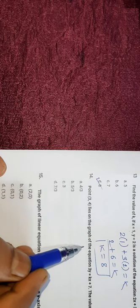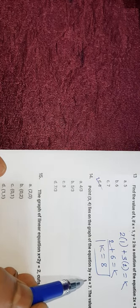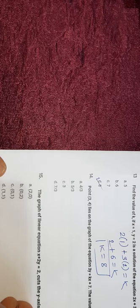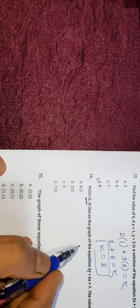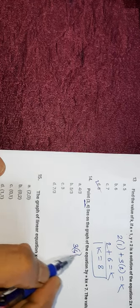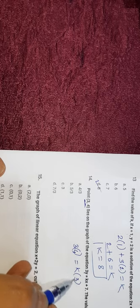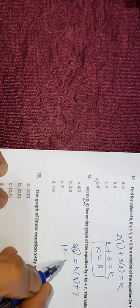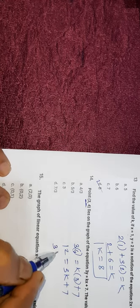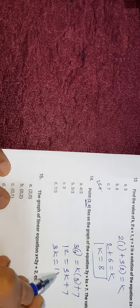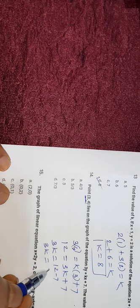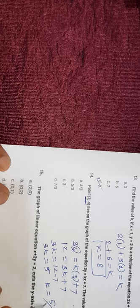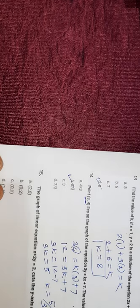Question number fourteen: (0.3, 4) lies on the graph of 3y = kx + 7. Substituting x = 3 and y = 4: 3×4 = k×3 + 7, so 12 = 3k + 7, then 3k = 5, so k = 5/3. B is the correct answer.